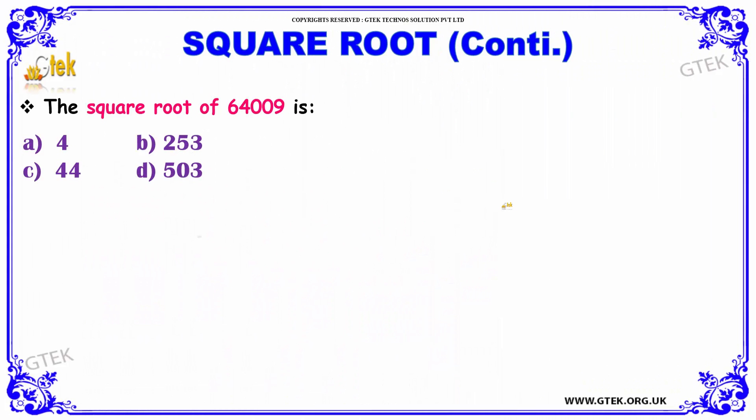Let us see our next interesting question. We have to find the square root of 64009. Our options are given to be 4, 253, 44 and 503. So what will be your answer?